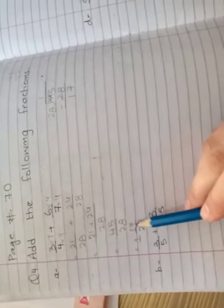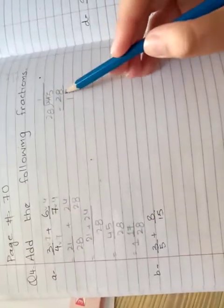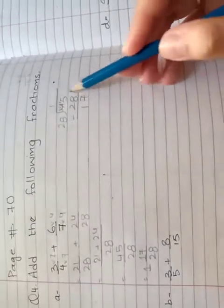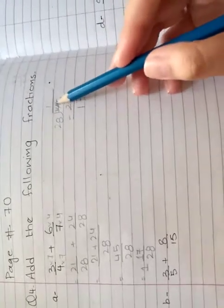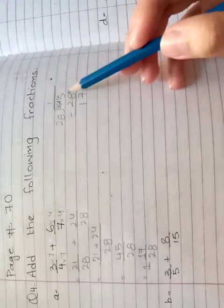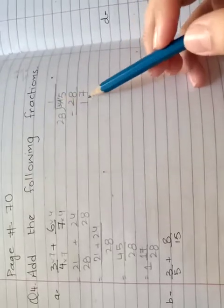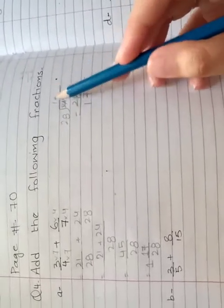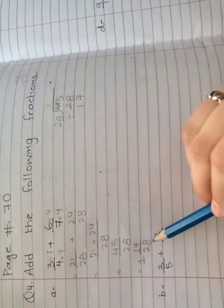Here there is no cutting, so we will divide directly. 28 one time is 28, minus, and here 17. So we have the answer here: 1 and 17 by 28. Next, question number 5.